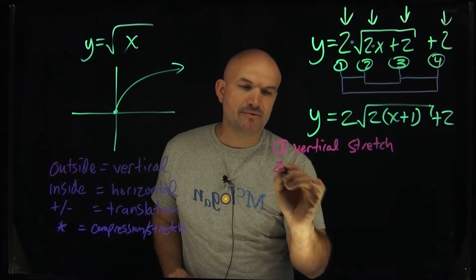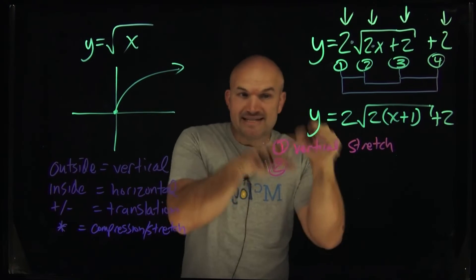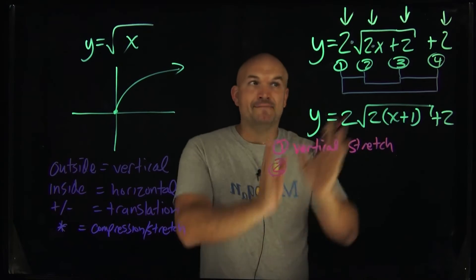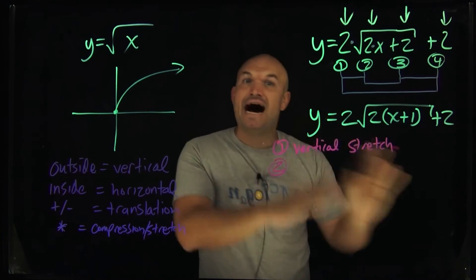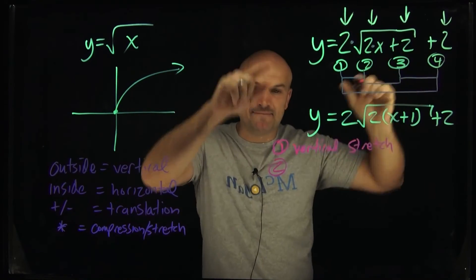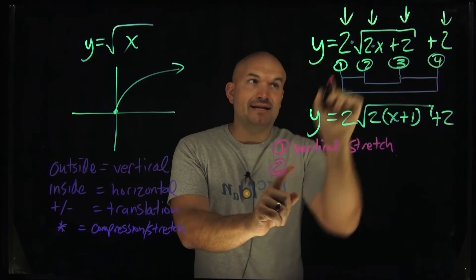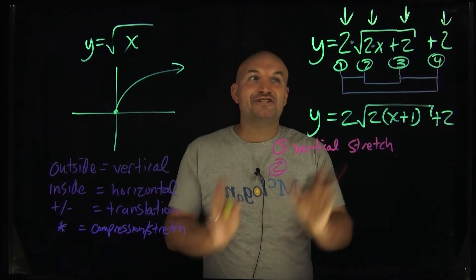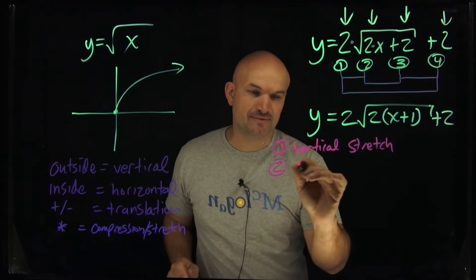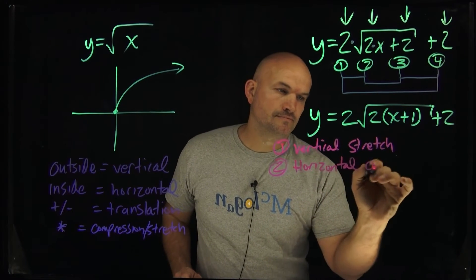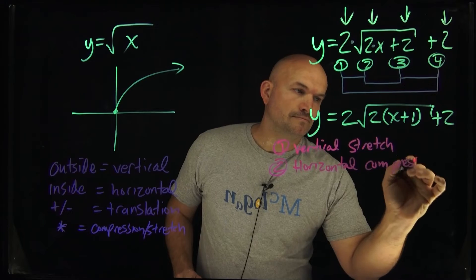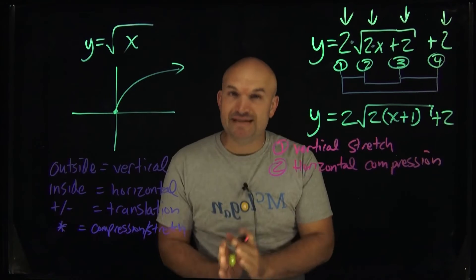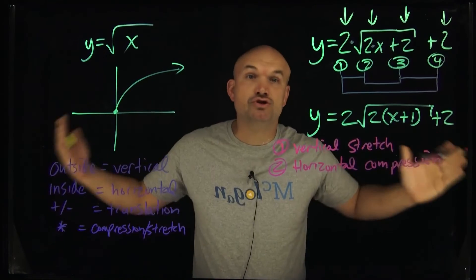Operation number 2 is also multiplication, but it's not vertical — it's horizontal. Here's the confusing part: whatever is inside is the opposite of what is outside. A lot of students will say it's bigger than 1 so it must be a stretch, but it's the opposite — it's actually a horizontal compression by a factor of 2. If it were between 0 and 1, it would be a horizontal stretch.